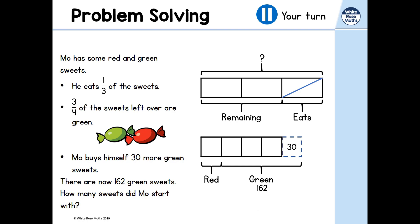I can't divide the green into three equal parts yet because I don't know if the 30 represents one full part. However, if I subtract the 30 from the 162 green sweets, I'm left with three equal parts totalling 132 sweets. 132 divided by 3 is 44, which means the red must also be worth 44. So the total remaining sweets are 44 times 4, which is 176. Since 176 represents two-thirds of the sweets, one-third would be 88. Mo started off with 88 multiplied by 3, which is 264 sweets.